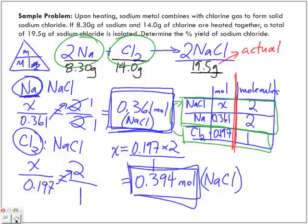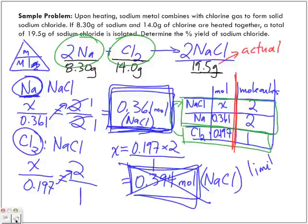But really, we're not going to be able to go beyond this point — this is where it ends. This is the number of moles of sodium chloride that we are actually going to make, or theoretically going to make. So the limiting reactant is sodium. When sodium runs out, the reaction ends, and we are only going to produce 0.361 moles of sodium chloride.